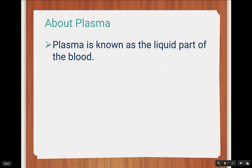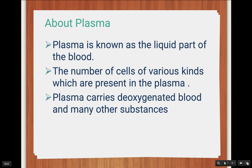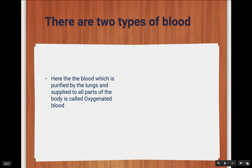Now, about plasma — what is plasma? Plasma is the liquid part inside the blood. The liquid state of blood is called plasma. Many types of cells are present in plasma — RBC, WBC, and platelets. These three cells are present in plasma. Plasma helps in transportation of oxygenated blood to other parts of the body and also helps carry many other substances.